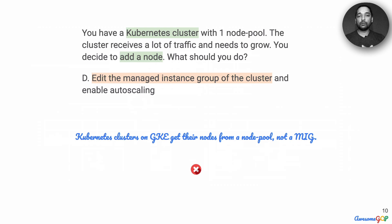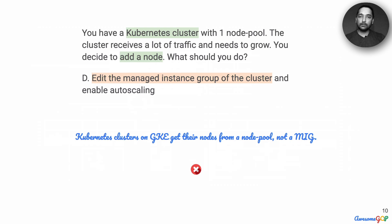We check with Dave, who also has some experience on Compute Engine and not Kubernetes Engine. He has a similar suggestion: edit the managed instance group of the cluster and enable autoscaling. We already know that Kubernetes Engine does not work with managed instance groups — instead it works with a node pool — and therefore we can immediately eliminate option D as well.